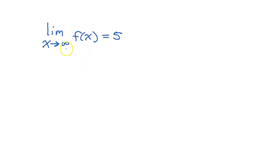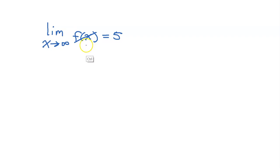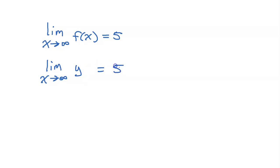First, I need to show you that if you know the value of a limit, you can do operations with this equation, doing certain things to both sides of this equation if you're very careful. Instead of calling this f of x, I'm going to call it y to make this easier to write. So let's say I have the limit as x approaches infinity of y, and that turns out to be 5.